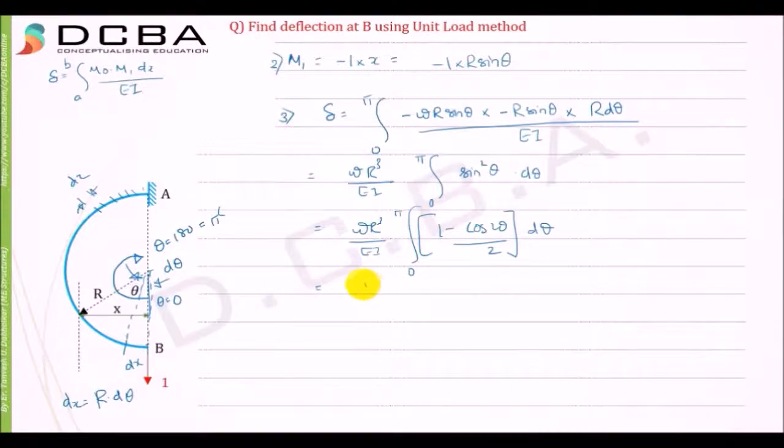It is equal to wr cubed upon 2EI, theta minus sin 2 theta divided by 2, going from 0 to pi. And we get this as equal to wr cubed upon 2EI.